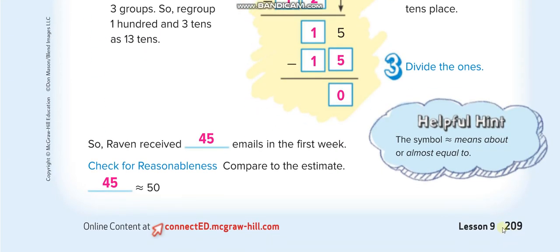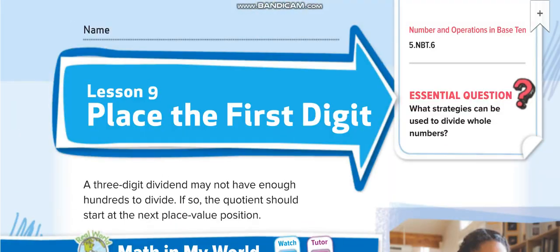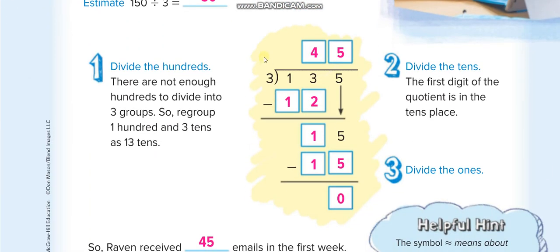Page number is 209. Place the first digit means when you have a division question where the first number is less than the divisor. In the last lesson we were dividing one by one—first divide this number, then minus, then bring the next number down. But in this lesson, the first number is less than the divisor, so we place the first digit by taking the second digit also. We divide two digits together.